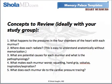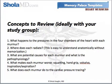I wrote a few ideas for questions that you should be talking through with your study group — things that aren't well-suited for a memory palace, but that are high yield for Step 1 and the wards. For example, what happens to the pressures in the four chambers of the heart with each murmur? Where does each murmur radiate? This is easy to understand anatomically without necessarily memorizing it. What are potential causes for each murmur, and what is the pathophysiology? What makes each murmur worse — squatting, hand grip, Valsalva, inspiration, expiration? That's very high yield. And finally, what does each murmur do to the cardiac pressure tracing?